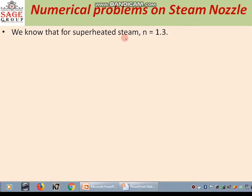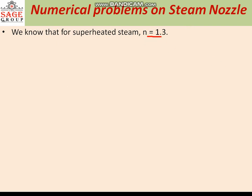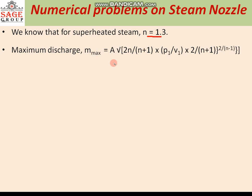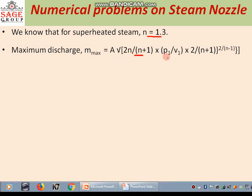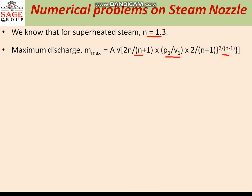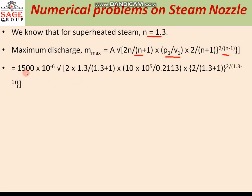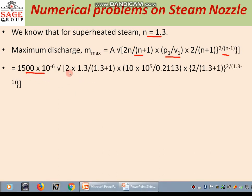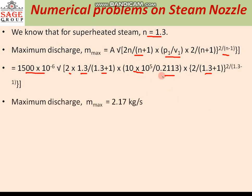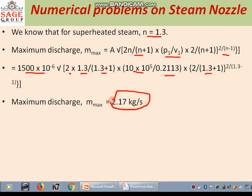For superheated steam, the value of N equal to 1.3. So maximum discharge M_max equal to A times square root of [2N/(N+1)] into [P1/V1] into [2/(N+1)] to the power [2/(N-1)]. Putting the values with N equal to 1.3, P1 equal to 10 into 10 to the power 5, and V1 equal to 0.2113, we get the maximum discharge equal to 2.17 kg per second.